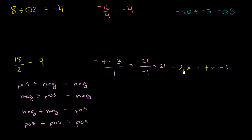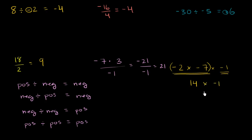Now let's do this last one — this is all multiplication, but it's interesting because we're multiplying three things. We can just go from left to right. First, negative 2 times negative 7: both are negative, the negatives cancel out, so this gives us positive 14. Then we multiply positive 14 times negative 1. Now we have a positive times a negative — exactly one of them is negative — so this is going to give me negative 14.